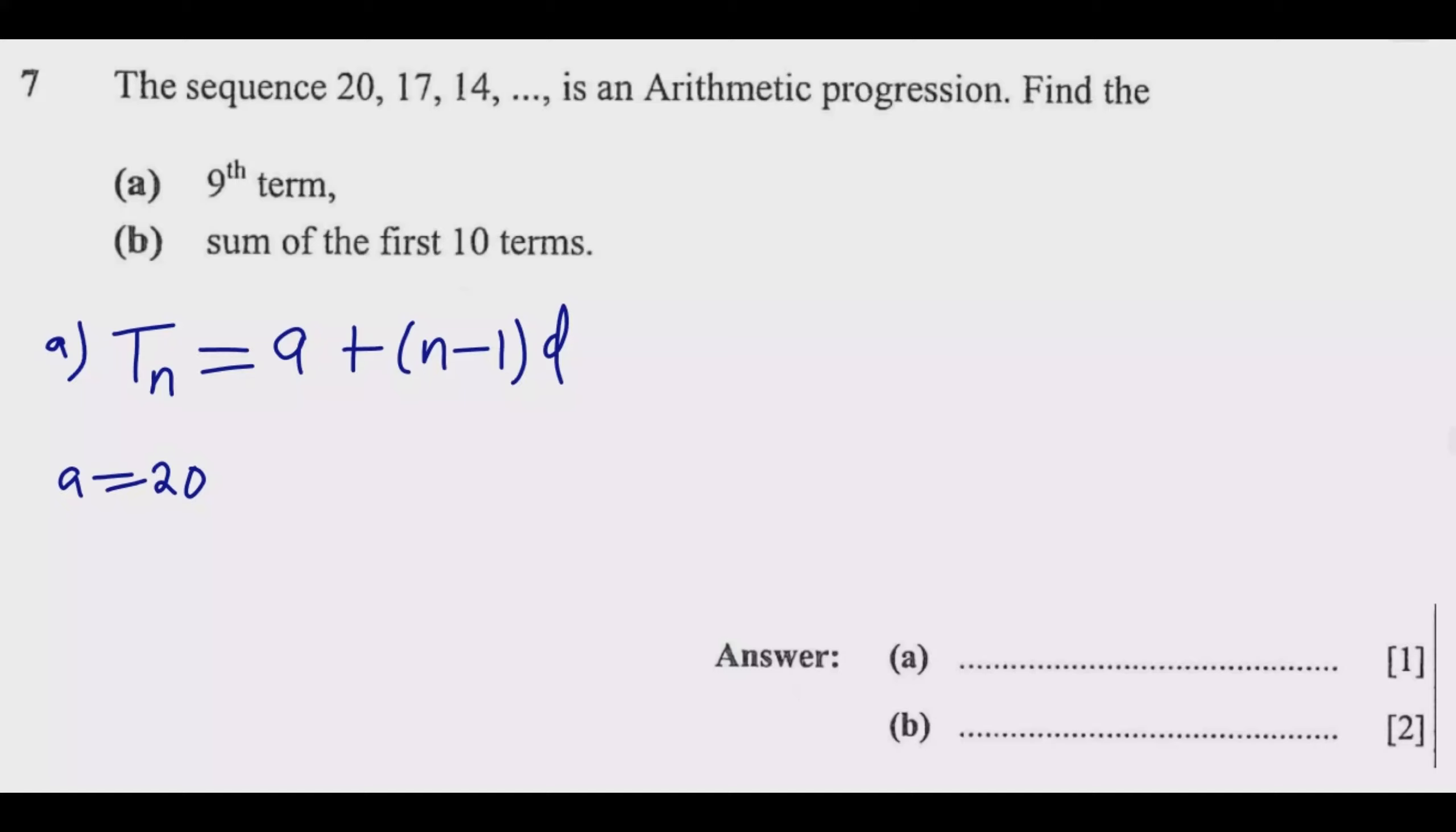In this case a equals 20, the first term, and n equals 9 because it's the ninth term. So we need to find d. How do you find d? To find d, it will be the second term minus the first term, which should be the same as the third term minus the second term.